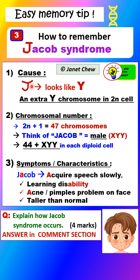If you press it downwards and bend it upwards a bit at the end, you get a Y-shaped structure. So think of the J as a Y — use your active imagination to imagine this process. The J begins to look like a Y, and the cause of Jacob Syndrome is an extra Y chromosome in each cell.